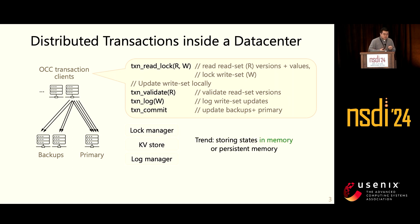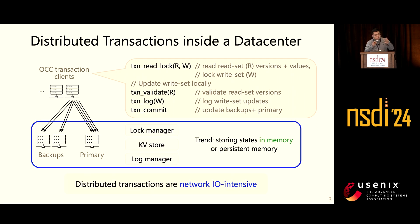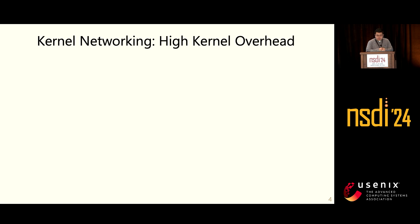A recent trend in distributed protocols is storing states in local memory or local persistent memory for fast access. In this talk, we mainly focus on in-memory transaction scenarios. Overall, distributed transactions are generally narrow I/O-intensive, as they tend to work on in-memory data nowadays, and by nature they communicate frequently among different replicas. This I/O-intensiveness causes problems. The most important problem is that when implemented using the widely-used kernel networking stacks, it incurs really high kernel overhead.